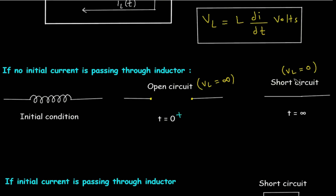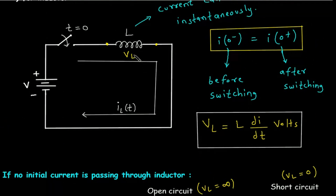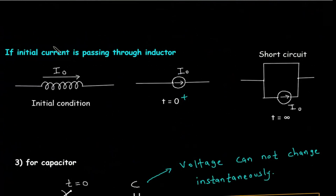When t=∞, VL will be 0. VL=0 means the inductor is short-circuited. If an initial current IO is passing through the inductor, then at t=0⁺ the same current IO will pass through the inductor. At t=∞, the same current IO continues to pass through the inductor and it is in parallel with a short circuit.